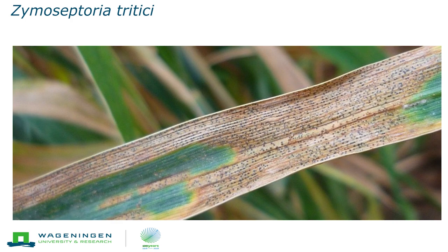You can see necrosis in the leaf, and all the black spots are asexual fruiting bodies, or pycnidia. They release spores once humidity is high, and these spores are splash-dispersed. The fungus also has a sexual cycle - some of these black dots are perithecia, containing ascospores that are discharged and airborne. That's how the epidemiology of the disease works.